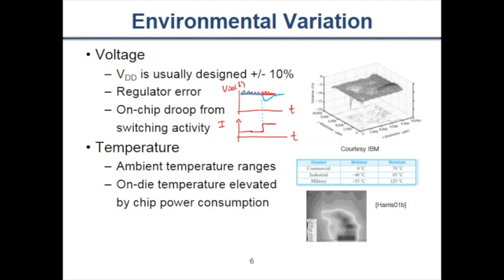Temperature can and will change across your chip or even within it from one corner to the next. If a microprocessor is decoding H.264 video, that particular core might be much hotter than other cores. There are standard temperature ranges designers try to achieve: commercial is 0 to 70 degrees Celsius, industrial is minus 40 to 85 Celsius, and the military range — very strict — is minus 55 to 125 degrees Celsius.